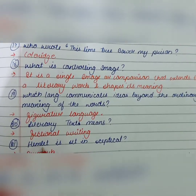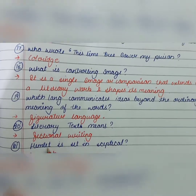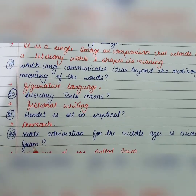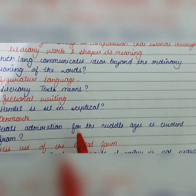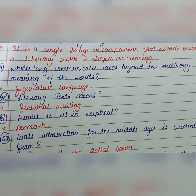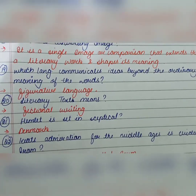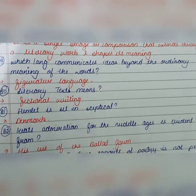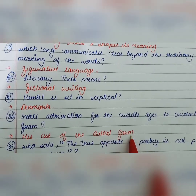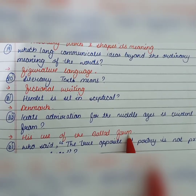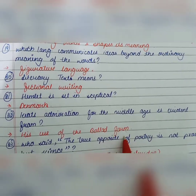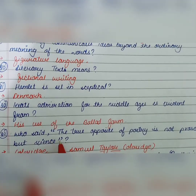Hamlet is set in Denmark. Keats's admiration for the Middle Ages is evident from his use of the ballad form. This shows that he admired the Middle Ages because the ballad form was very commonly used during that period.